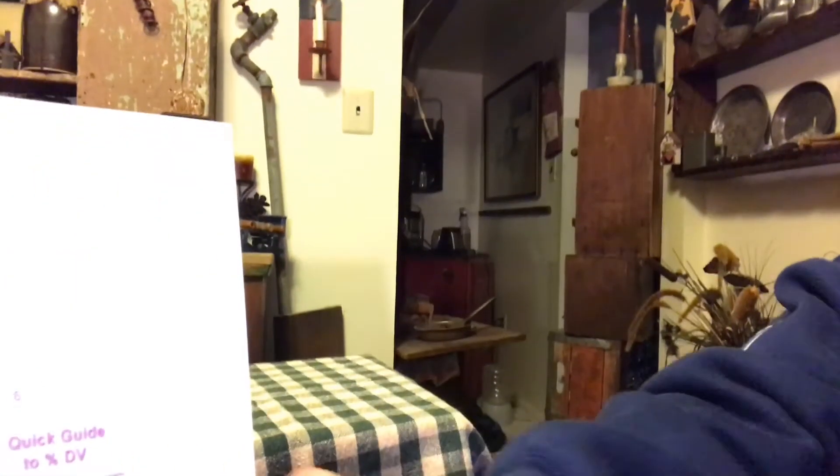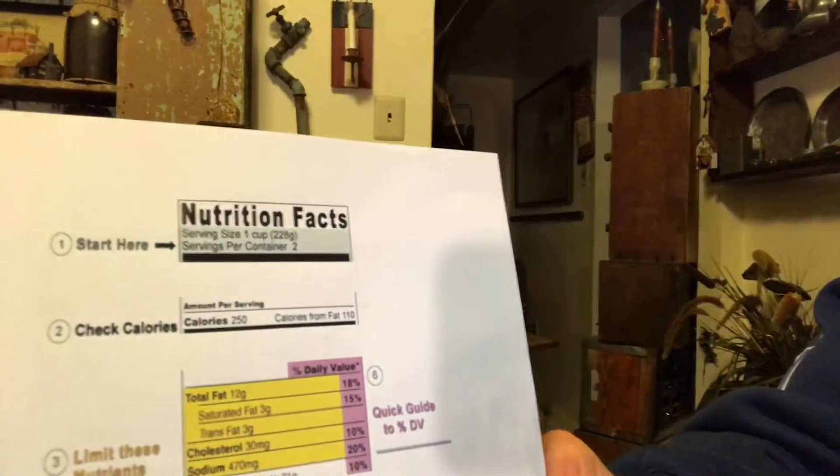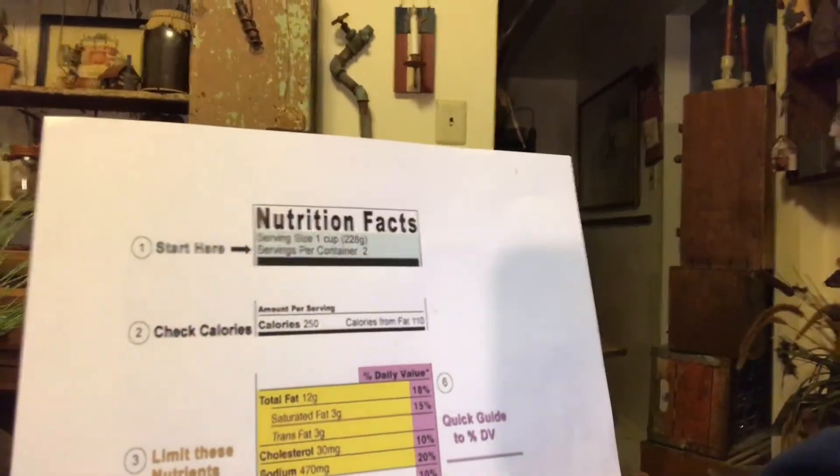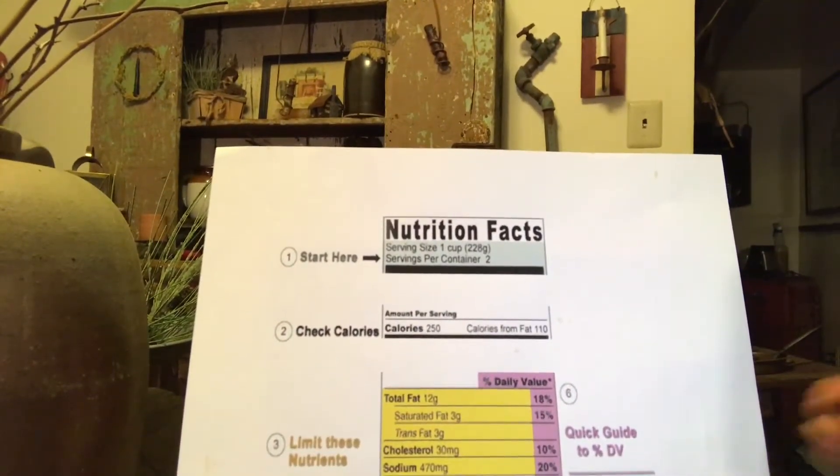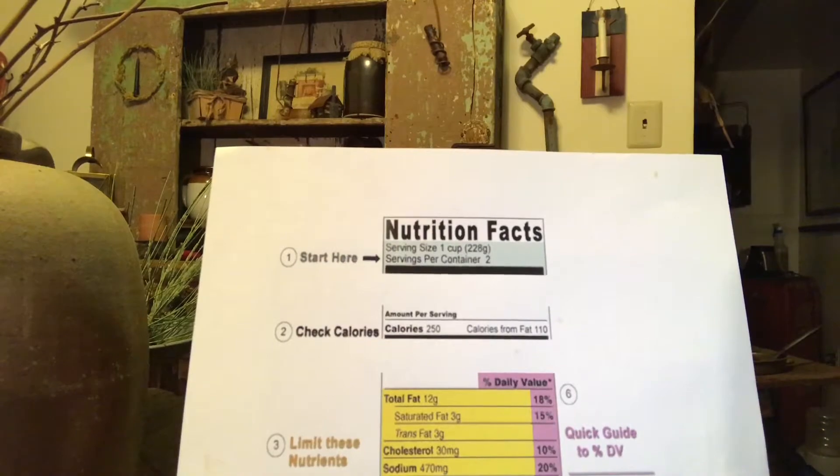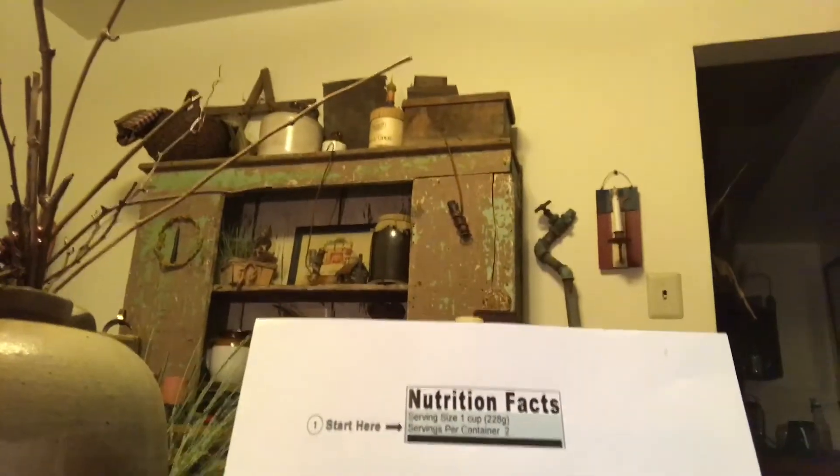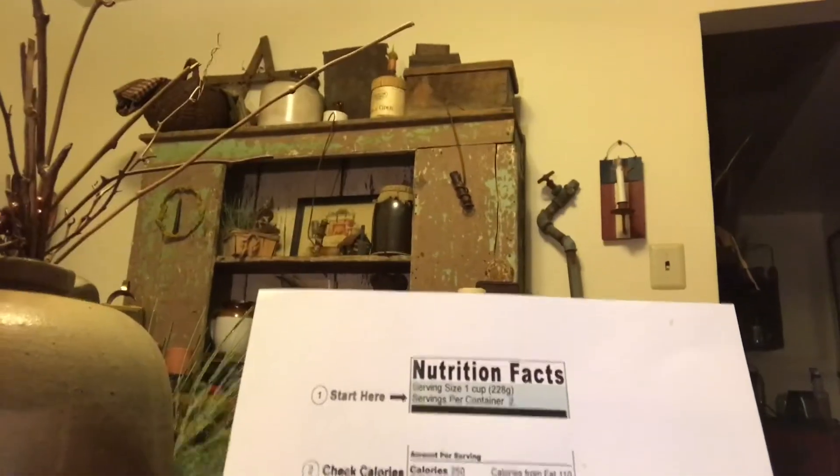With that said, I want to turn this around and I've created an example here of looking at the Kraft Macaroni and Cheese food label. And I've blown it up, I've made things color coded, and what I just want you to do is just take a look at the top here.